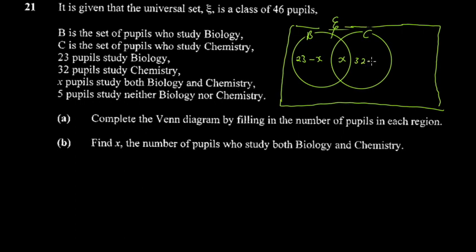For chemistry, 32 pupils study chemistry, so the chemistry-only region is 32 minus x — same reasoning, removing students who study both. Then five students study neither biology nor chemistry, so that goes outside both circles.